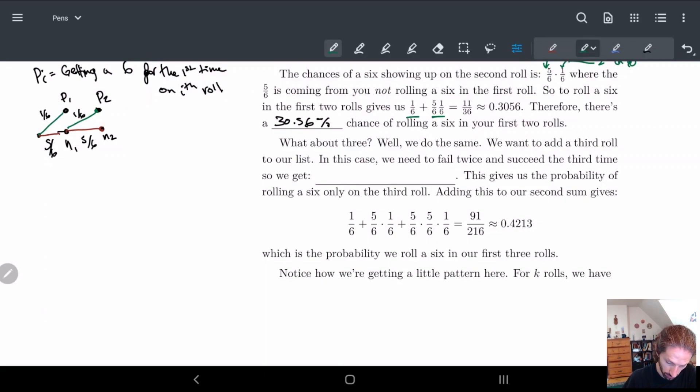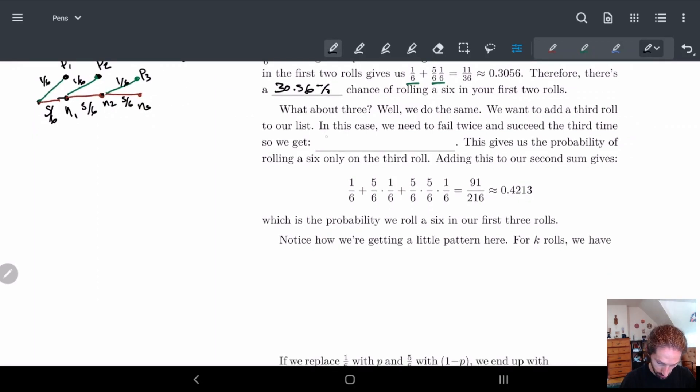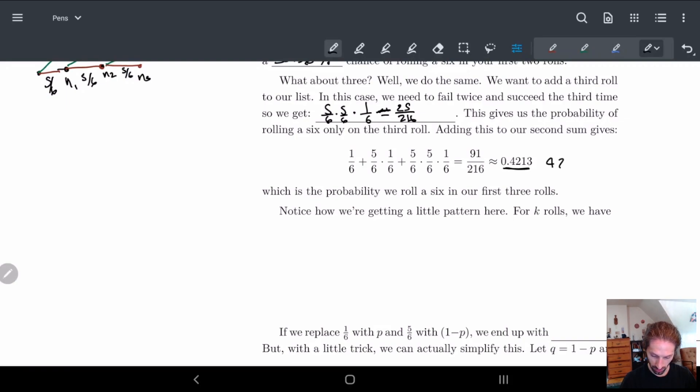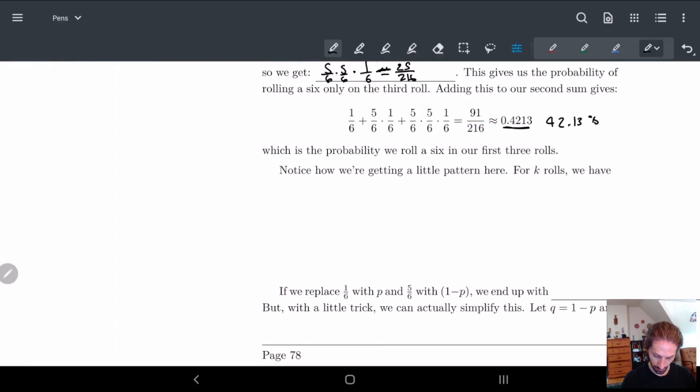Okay, so what happens with the third one? Well, third one, we do basically the same thing. So I either roll a 6 or I don't. And so here we have P3. Here we have N3. And again, these things are going to be the same, 5/6 and 1/6. And this is coming from exactly that idea. So here, we fail the first two times. So that's 5/6 and 5/6. And then we succeed the third time. So that's 1/6. And this is actually directly equal to 25 over 216. And adding these together basically gives us 42.13%. And so you can see here, we're getting a little pattern.